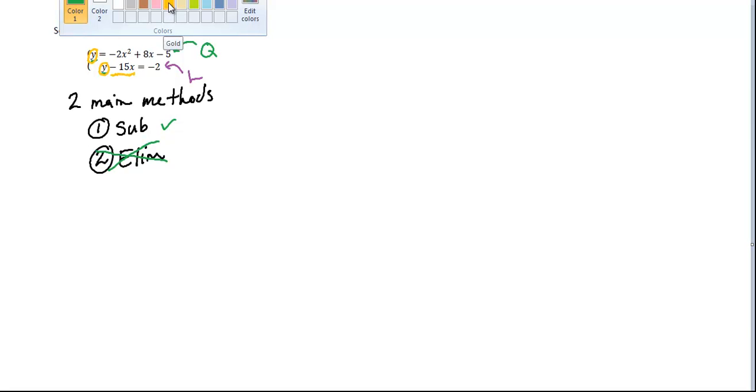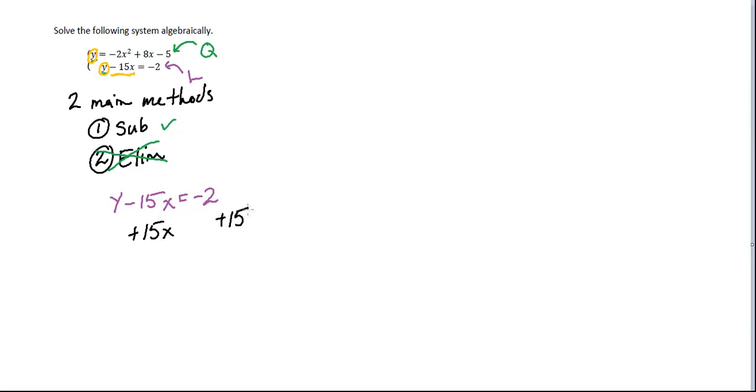Alright, so I'm going to go ahead and work on my linear system right now. Get that y by itself so that I can just set it equal to the quadratic and work it out from there. Well, this is easy. All I have to do here is add that 15x to both sides. And so now what I'm left with is y equals negative 2 plus 15x.